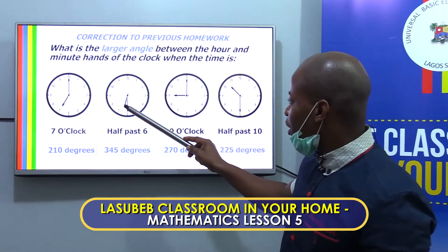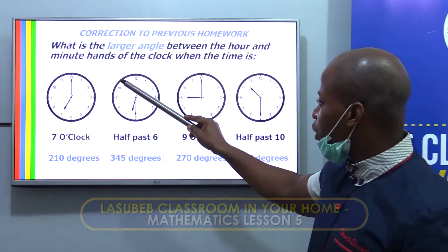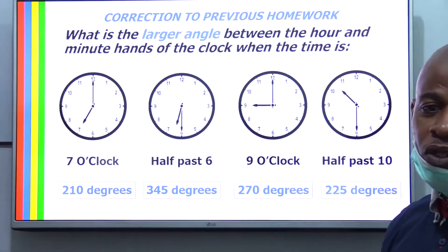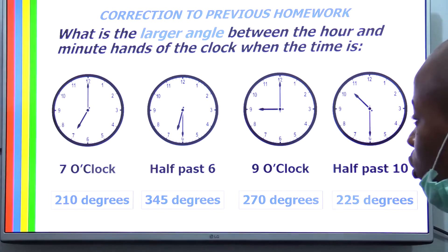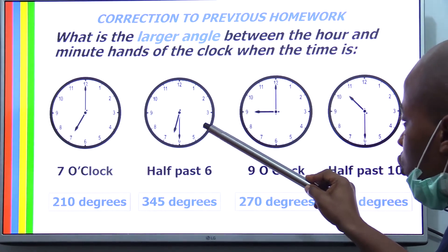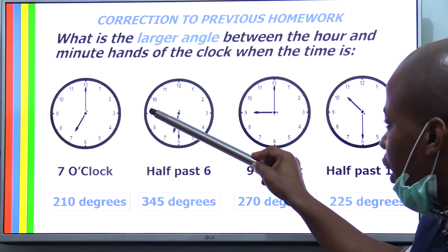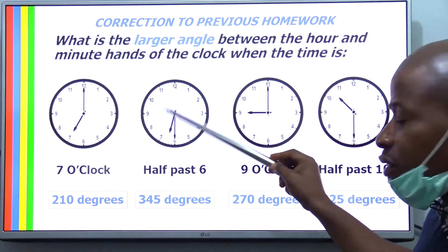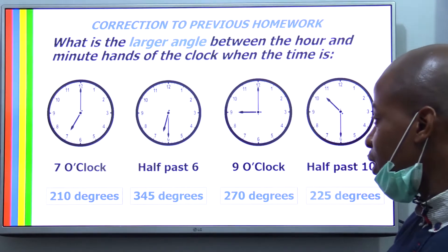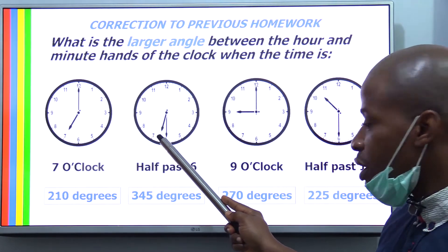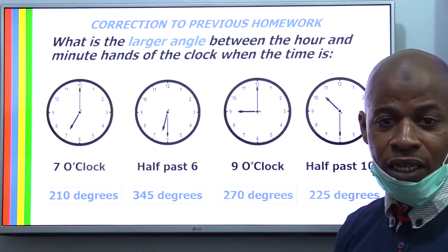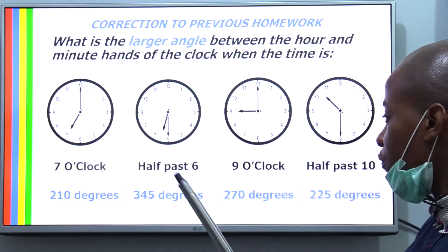Now, the larger angle here — if we go this way, we are almost coming back to the starting point, which means it's almost a full circle, almost 360 degrees. But if we count, we go one through eleven — 30 degrees in 11 places is 330. Yet we still have half of it from here to here, and that is 15 degrees. So 330 plus 15 degrees is 345 degrees.